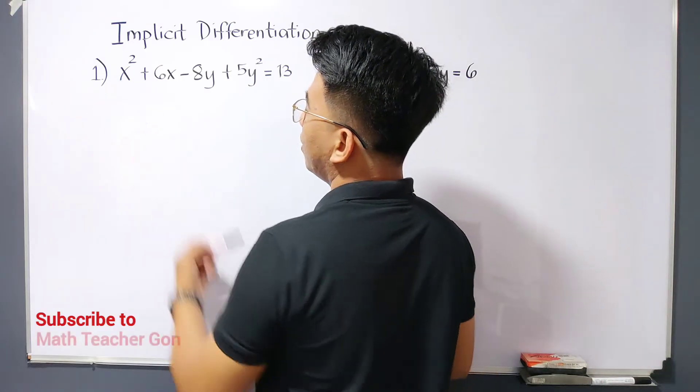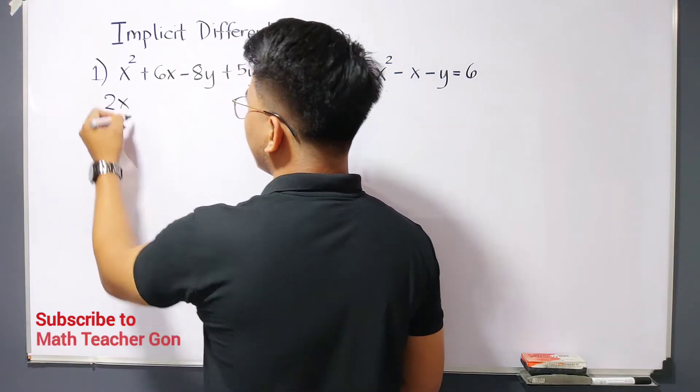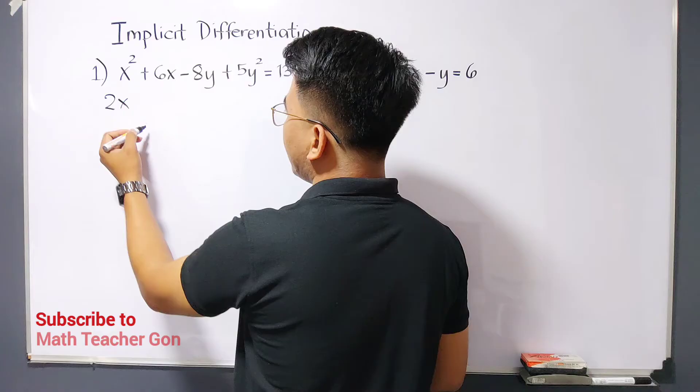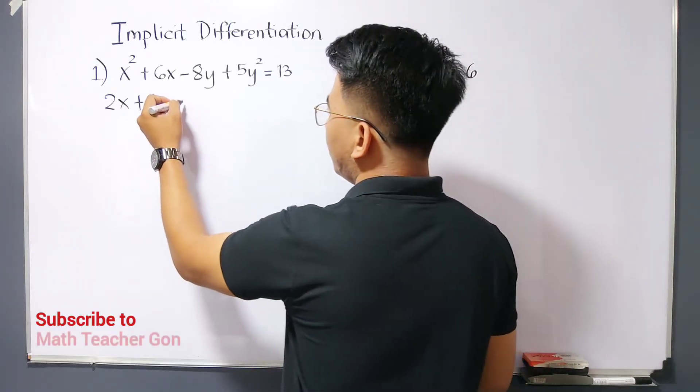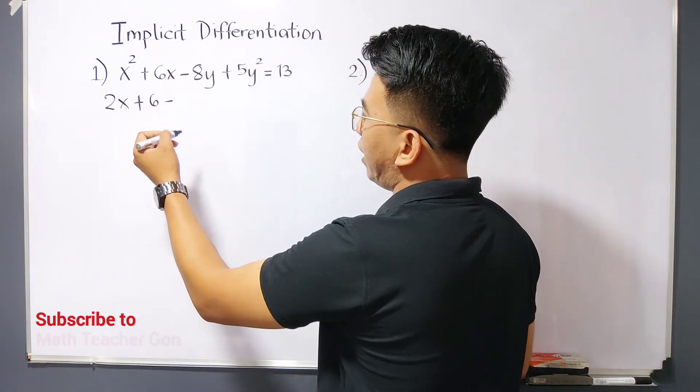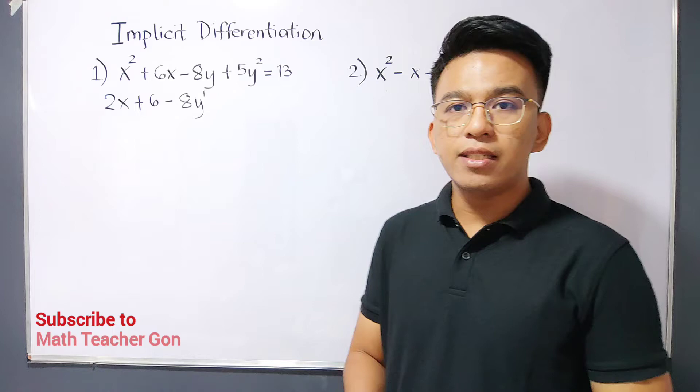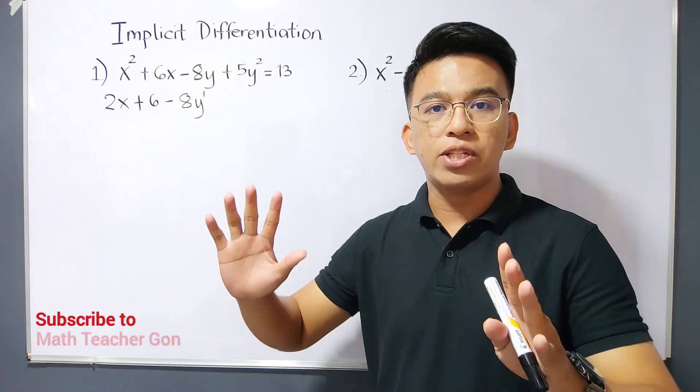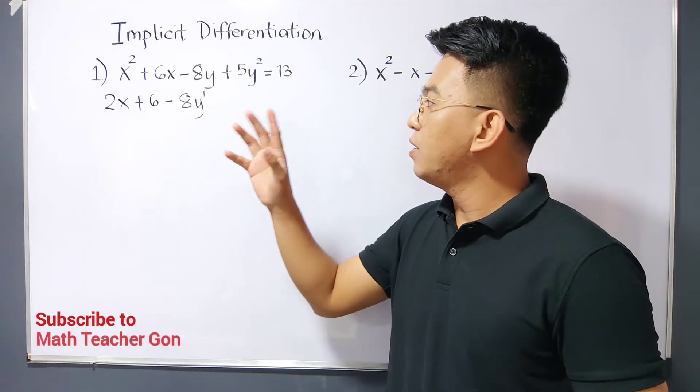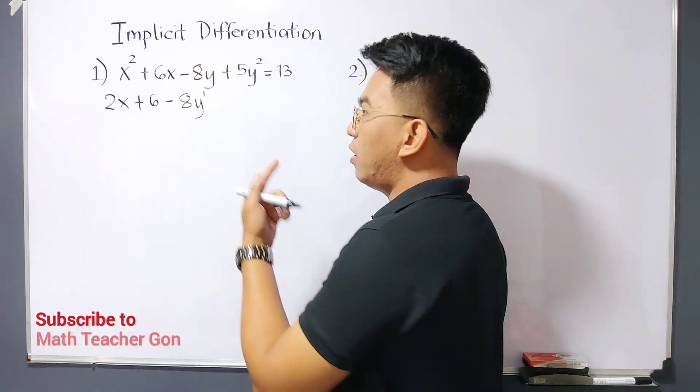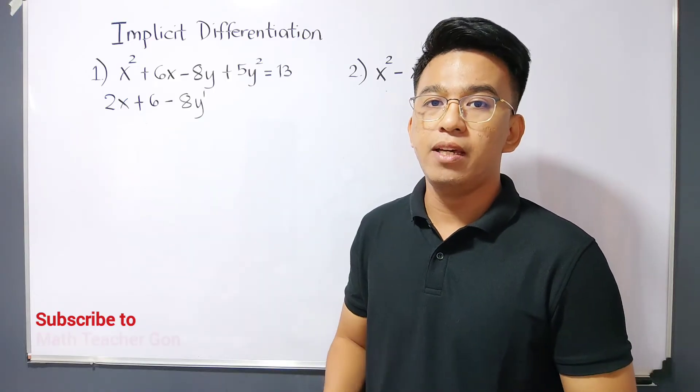If you derive x squared, that would be 2x. For 6x, that is plus 6 minus 8y, we can differentiate 8y as 8y prime. As you can see, instead of the y disappearing, when we derive the y variable, it becomes y prime. By the way, some use the notation dy over dx, but I use y prime. They're the same.